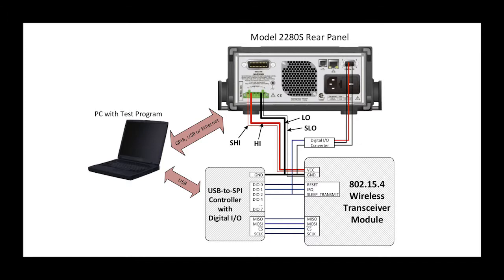The device itself is controlled using a USB to SPI controller. Digital I/O pins on the USB to SPI controller are used to trigger the wireless device to start its transmission, and are simultaneously used to trigger the model 2280S to make a measurement. The entire test system is controlled by a custom test program running on the PC.